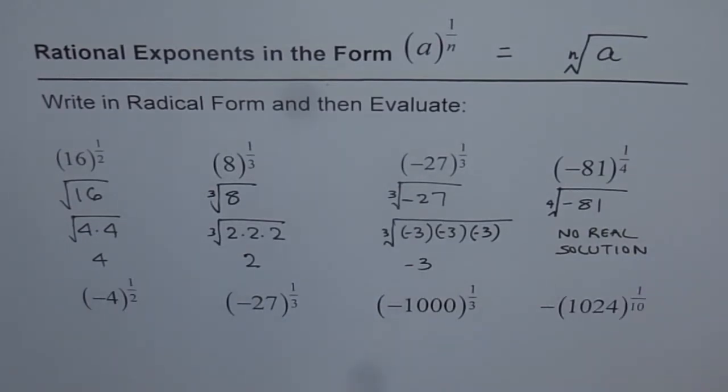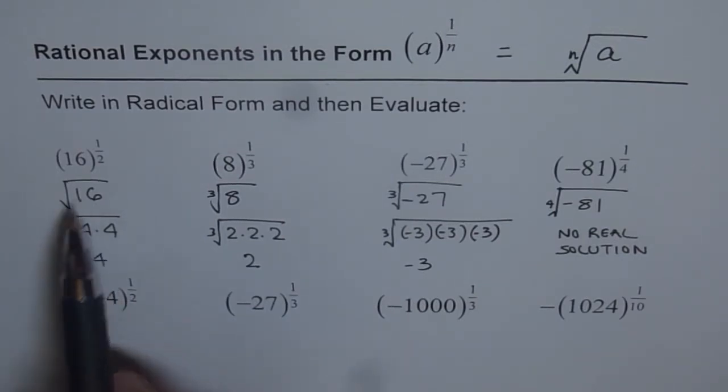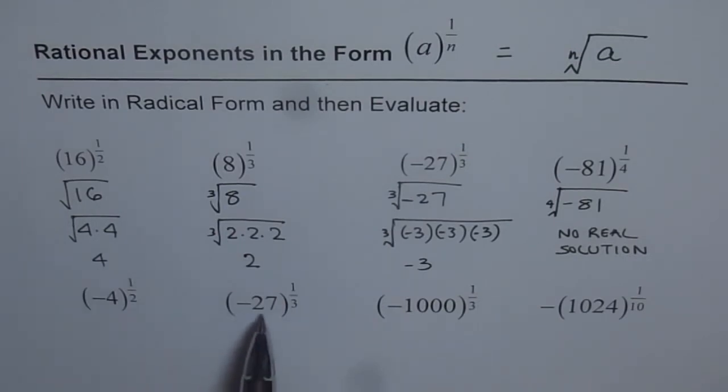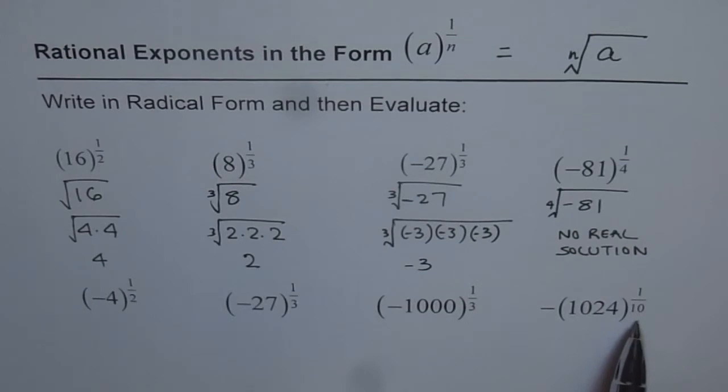I hope you understand how I did all these. Now, these are your practice questions, four of them. Minus 4 square root. You have to first write in the square root terms. Minus 27 cube root, minus 1000 to the power of 1 over 3. And here, you will notice minus is outside, 1024 to the power of 1 over 10.